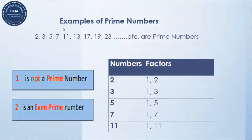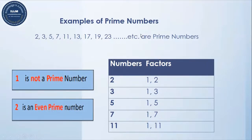Let's have a look at examples of prime numbers. As I have told you earlier: 2, 3, 5, 7, 11, 13, 17, 19, and 23 — these are all prime numbers. Why? Because these numbers are having only two factors: one and itself.